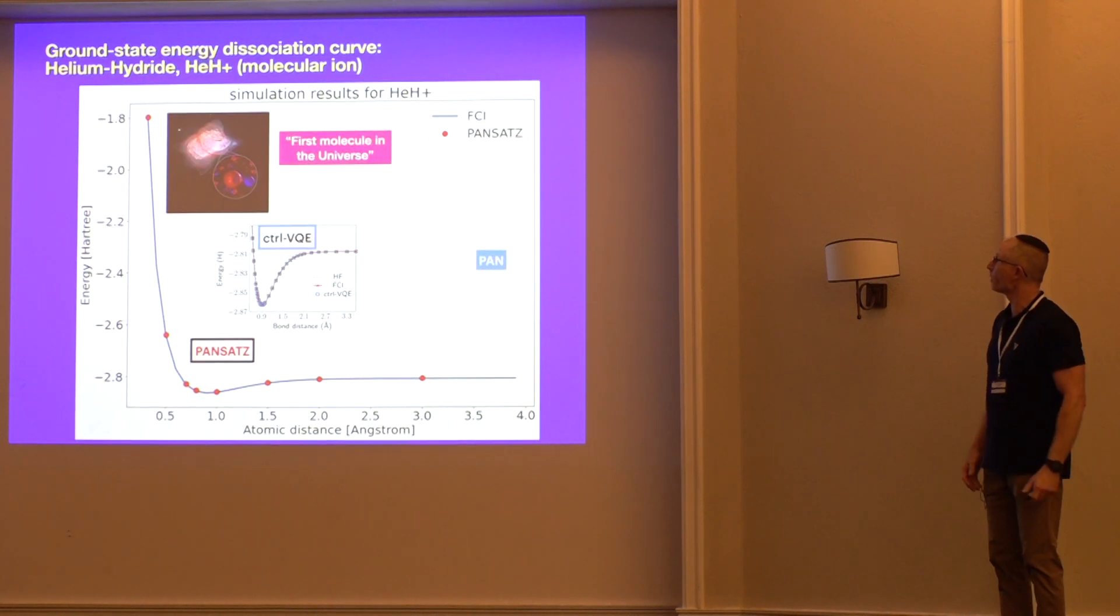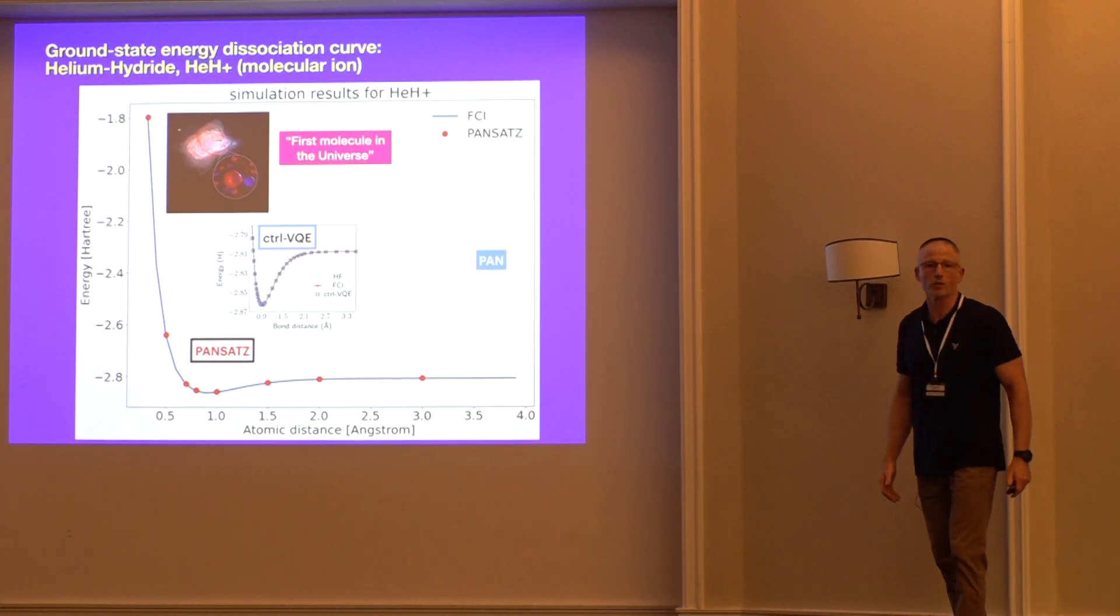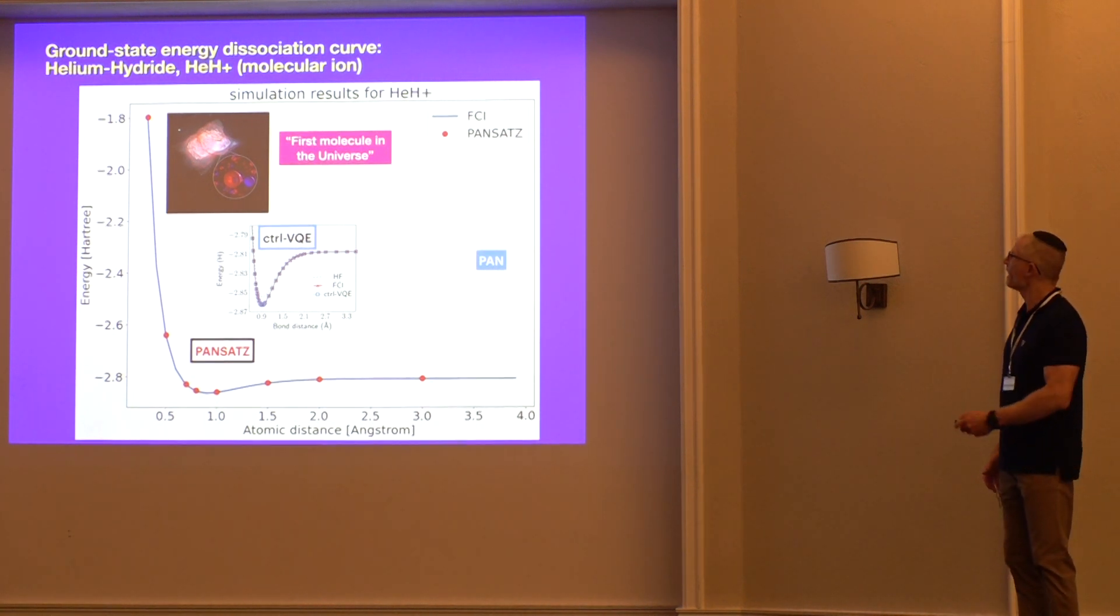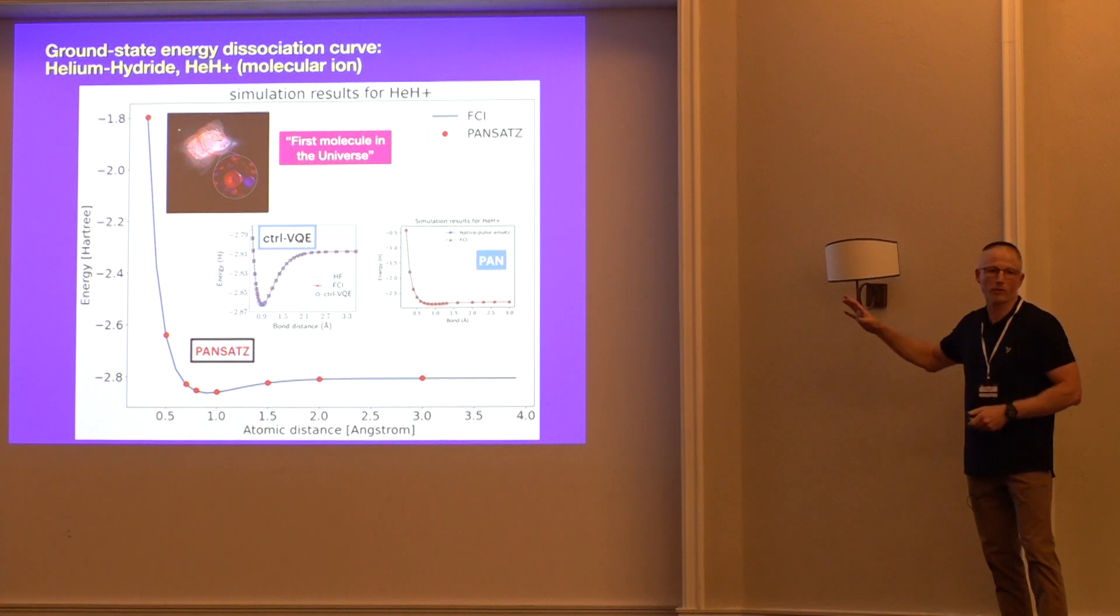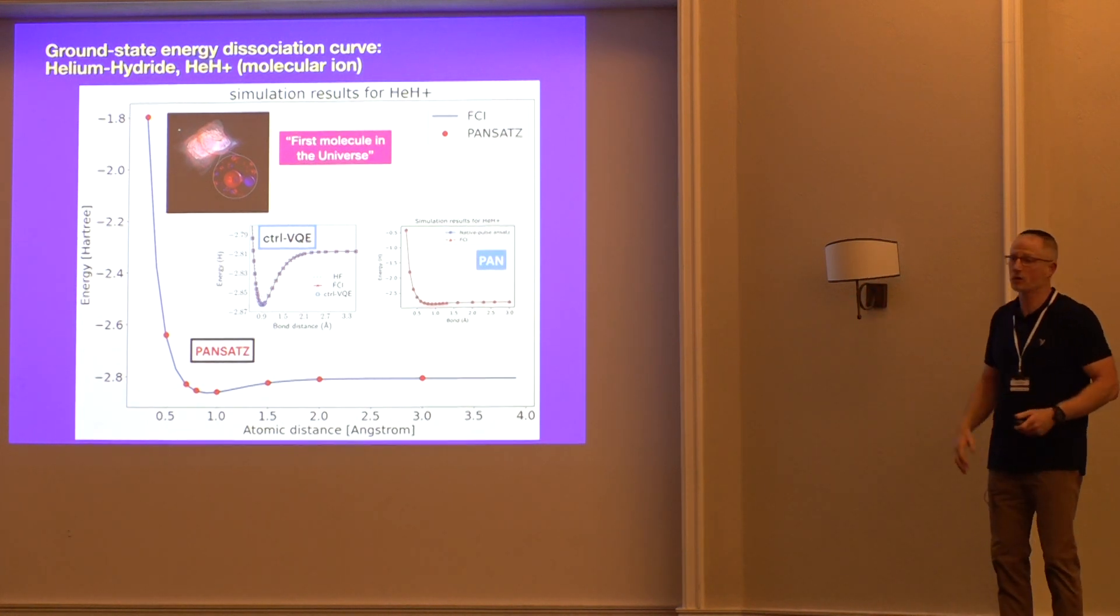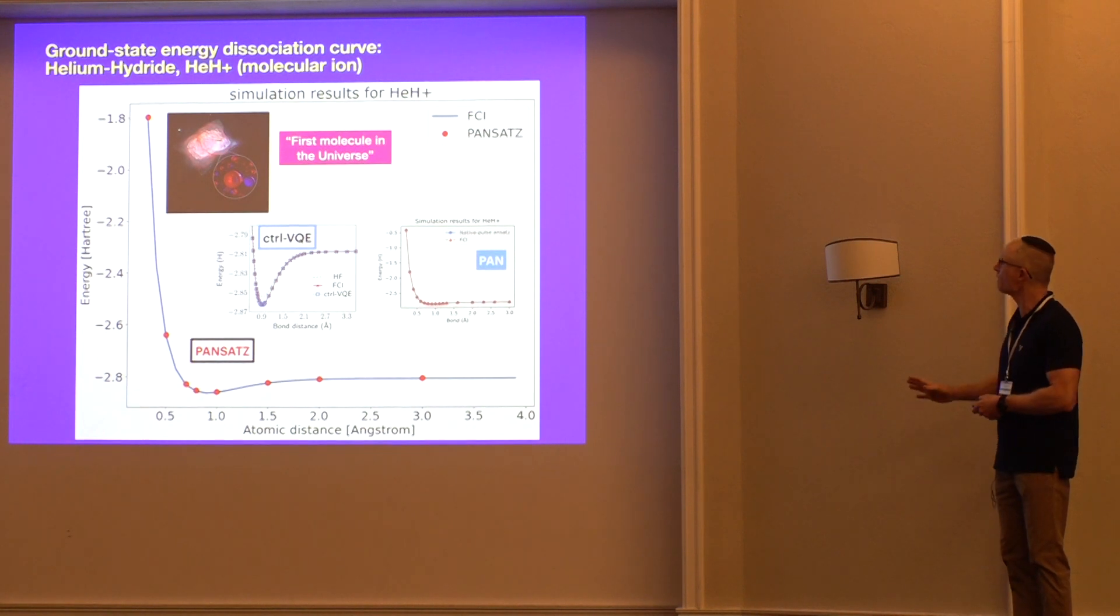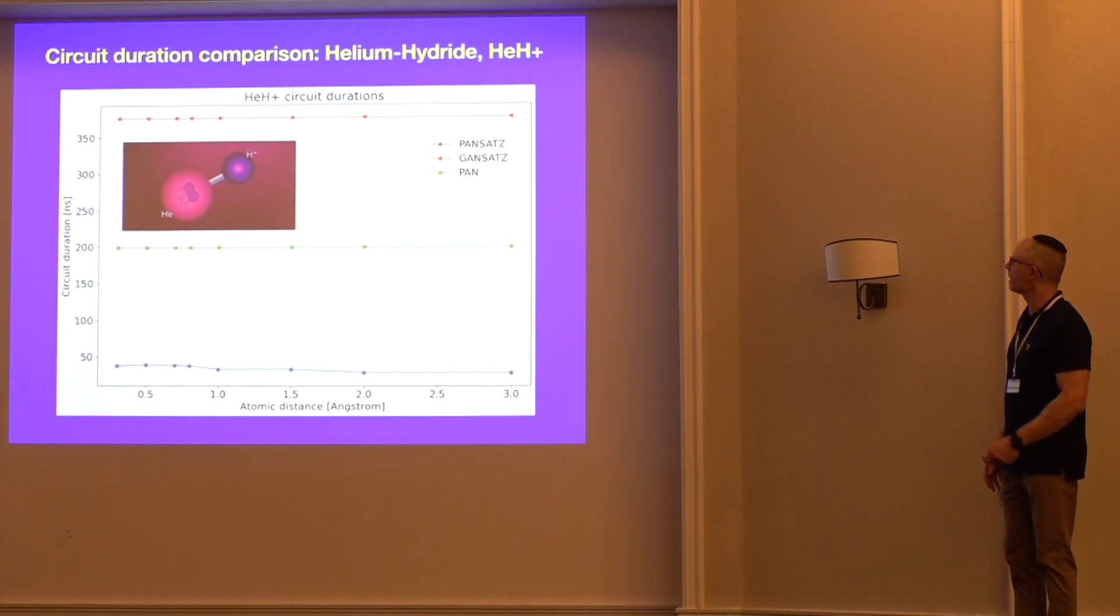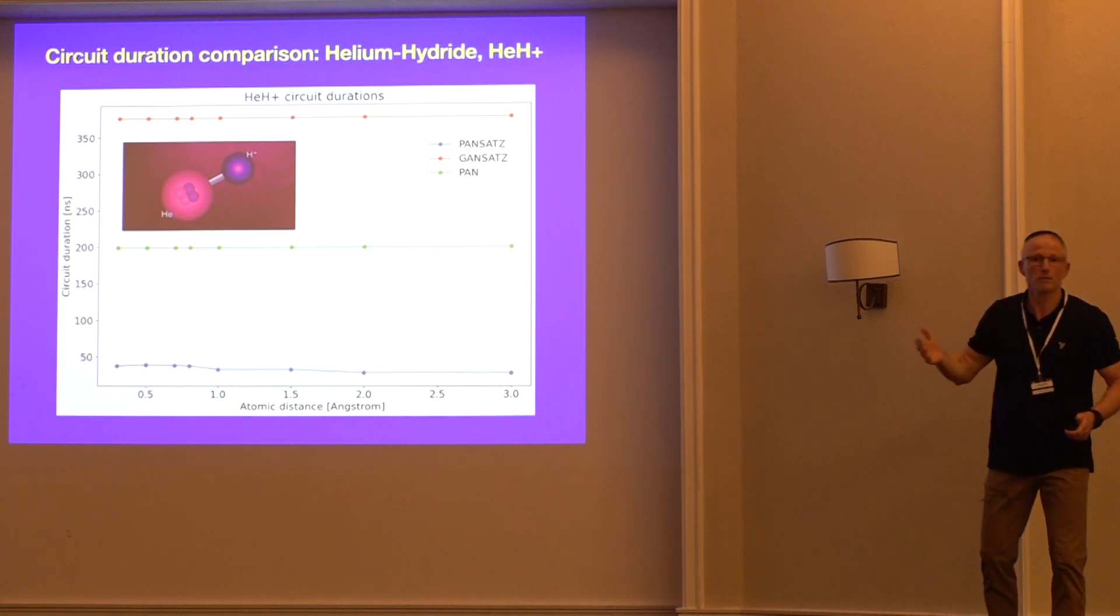That's result number one. Result number two is the first molecule in the universe, helium hydride. And we're showing, again, the same plot. Here's our pansatz result versus the FCI. Here's the control VQE. Oh, there is PAN. Where's PAN? There he is. All three of them give good results for this molecule. It's not that challenging, I guess, to compute. So that's fine. The durations are shown here. Here, gansatz is up again, north of 350. PAN is 200, and we're down below 50. So the implication here is that we can run longer circuits without...